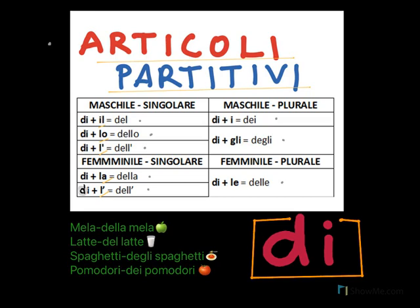So let's see here. You have the word 'mela' — you know it is 'la mela,' feminine singular — and then you will combine the definite article of 'mela' with 'di.' So combining them you will have 'della mela,' which means some apple or a part of apple. If you do it in the plural, it will be 'le mele,' and combining with 'di' it will be 'delle mele.'